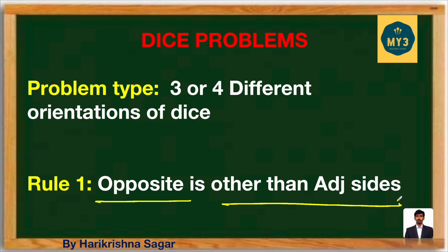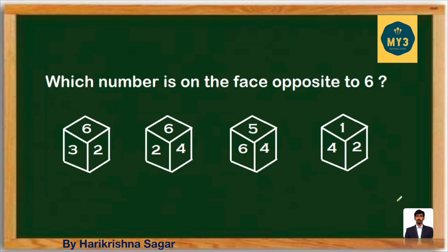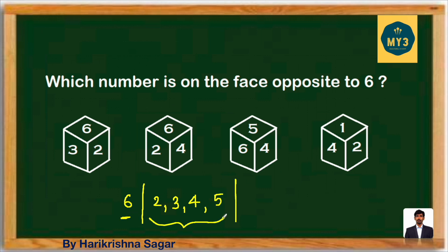The key point: opposite is defined as other than adjacent sides. You try to figure out all adjacent sides, and whatever number is not there in the adjacent sides is the opposite. For example, which number is opposite to face six? Instead of finding opposite directly, figure out the adjacents to six: two, three, four, five are all adjacent. The leftover number, one, will definitely be treated as opposite. So opposite to six is one.